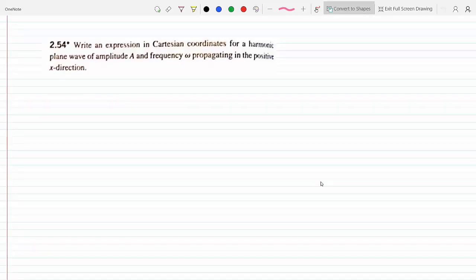So it wants the expression in Cartesian coordinates for a harmonic plane wave of amplitude A, frequency omega, propagating in the positive x direction. Do you know what the standard form is? The standard form is psi function equals the amplitude A...